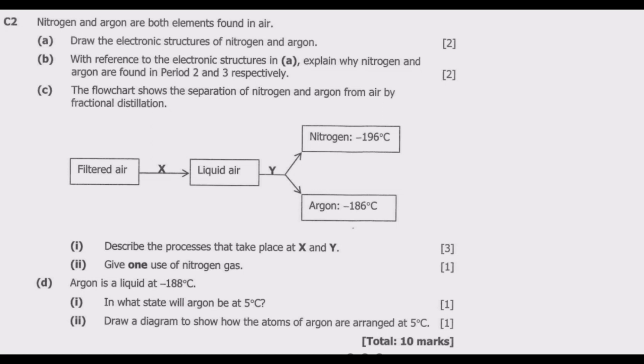Question C2: nitrogen and argon are both elements found in air. Question A: draw the electronic structures of nitrogen and argon. So for question A here, we have nitrogen. Nitrogen's mass number is 14 and the proton number is 7.